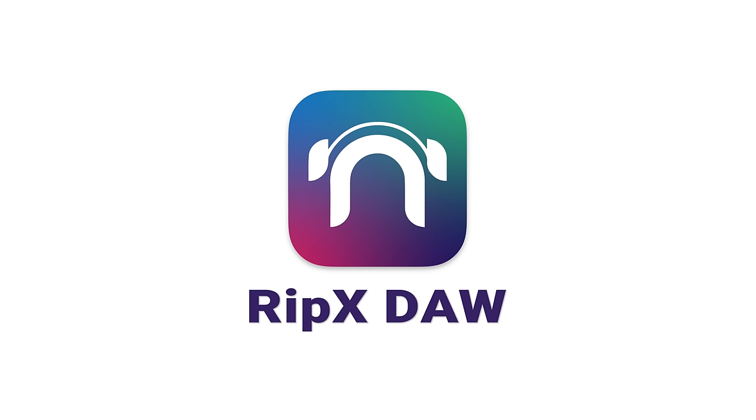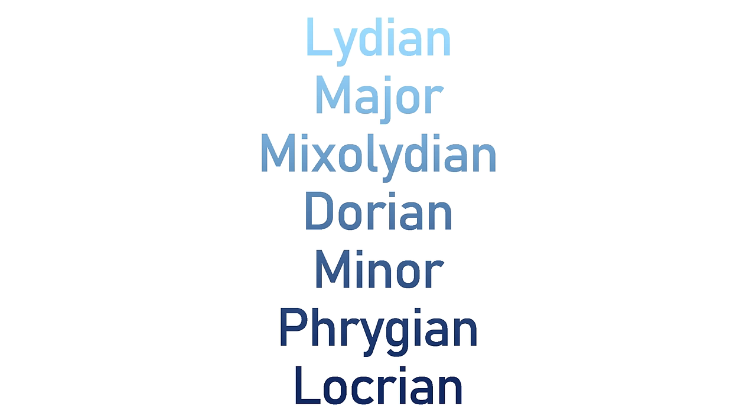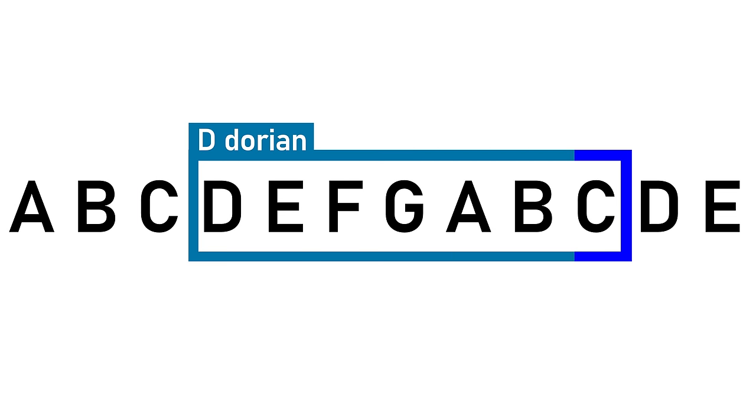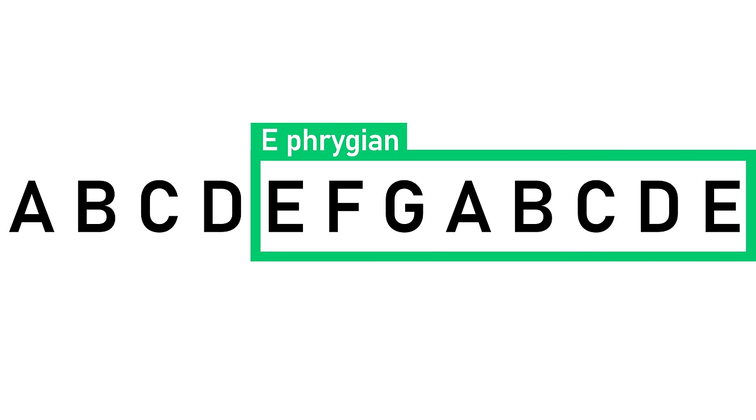This video is sponsored by RipXDaw. The seven modes of the major scale are effectively the same set of seven notes in the same order, but with each mode we're treating a different note in that collection as the tonic note.